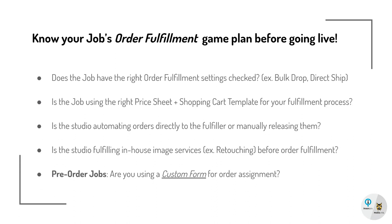Know your job's order fulfillment game plan before going live. Does the job have the right order fulfillment settings checked? Are you bulk dropshipping all of your orders to a single location, or are you direct shipping your orders to your customers? Is the job using the right price sheet and shopping cart template for your desired fulfillment process? Keep in mind that some partner labs require a different price sheet depending on whether you're planning on bulk dropshipment or direct shipping.